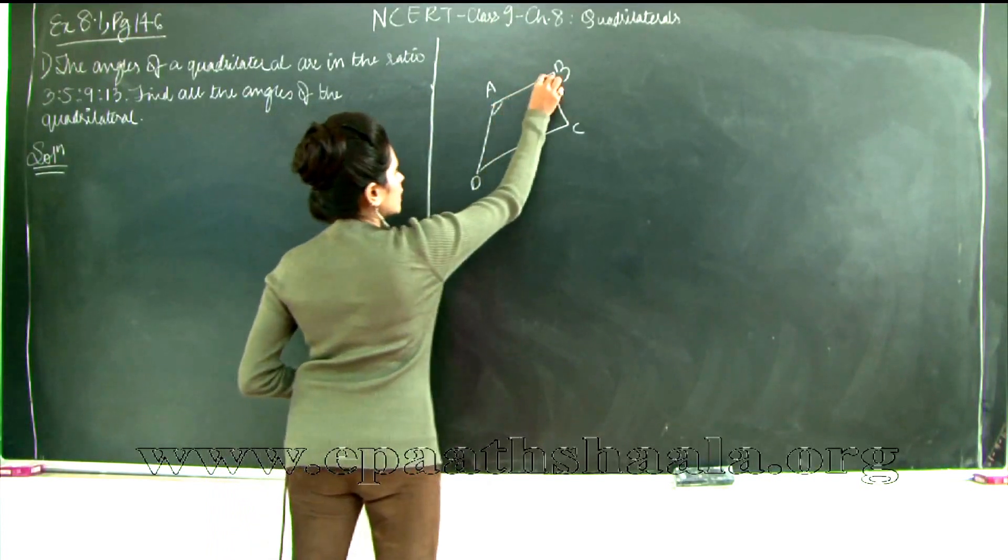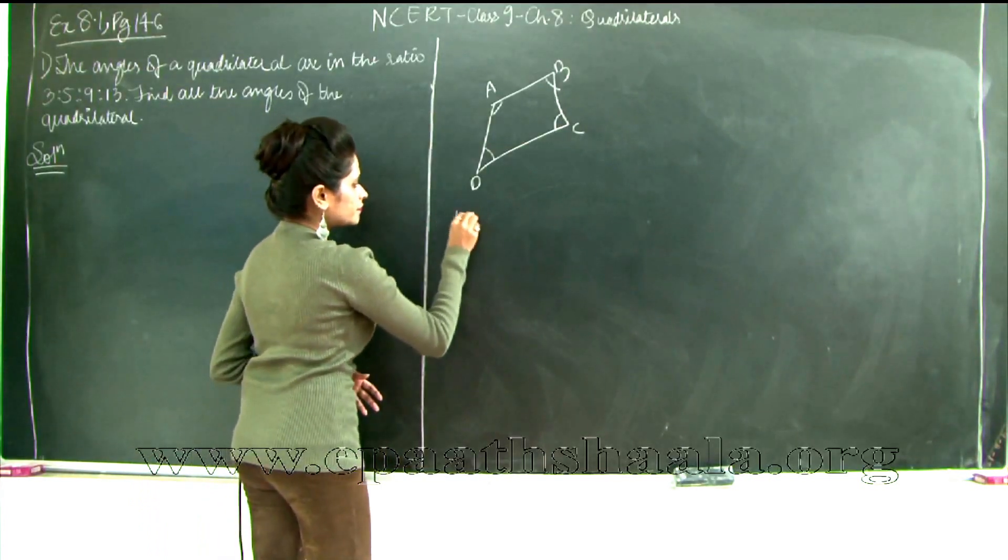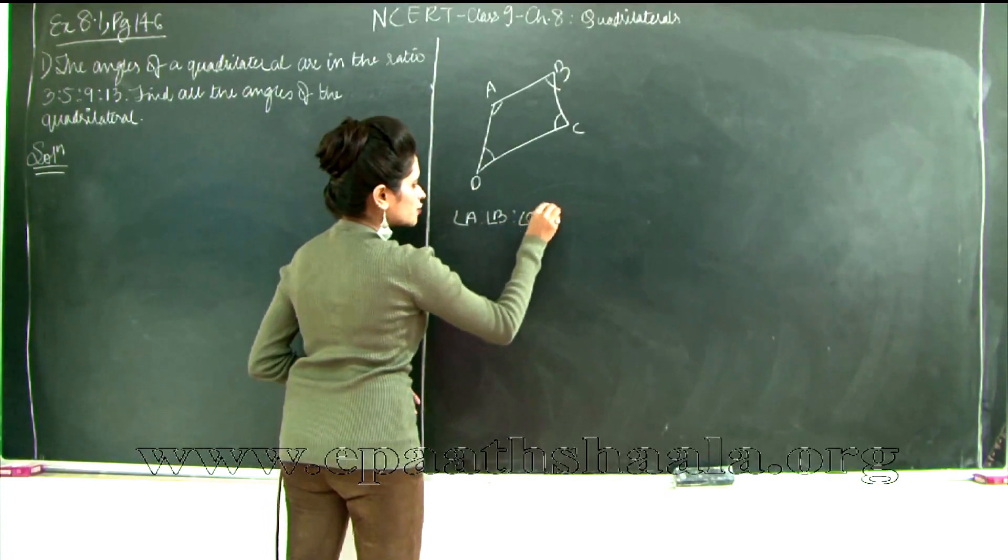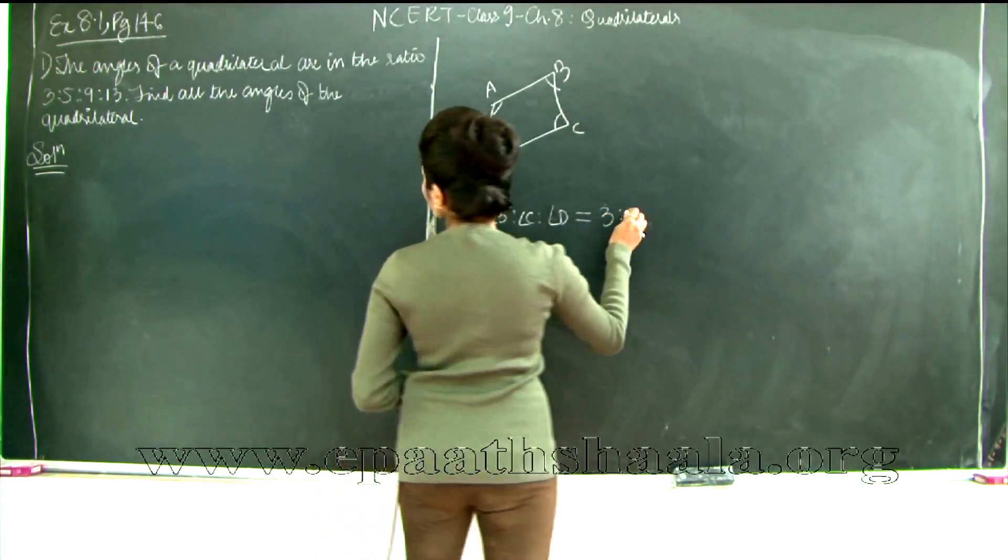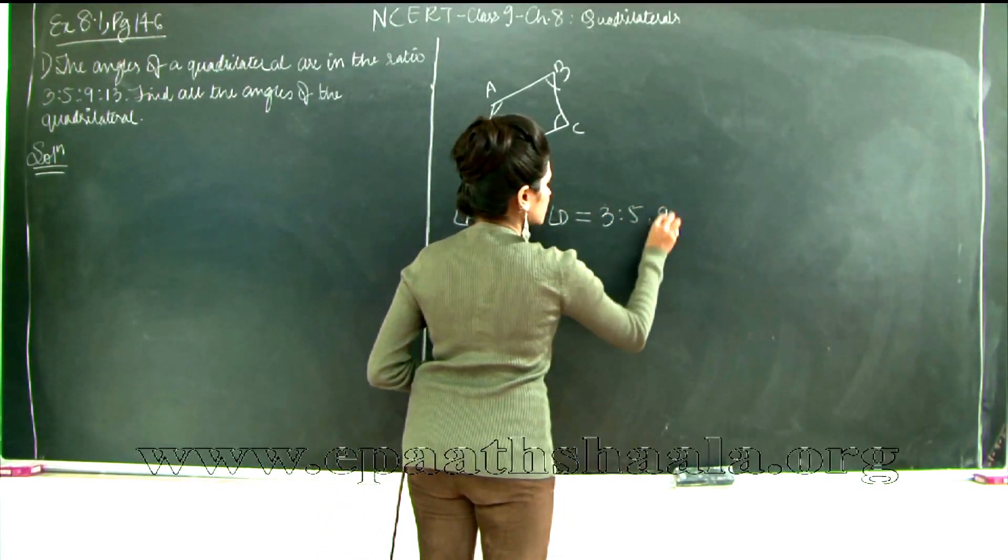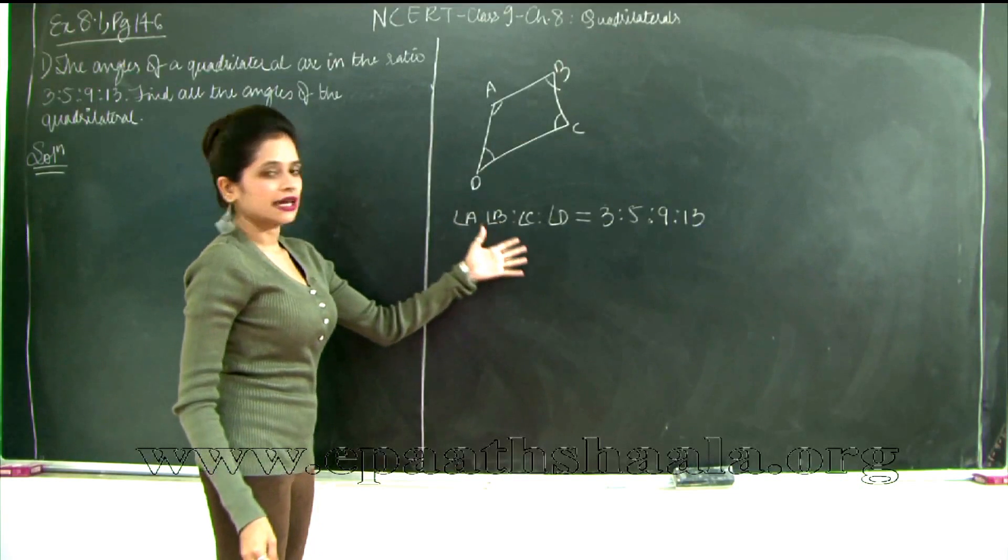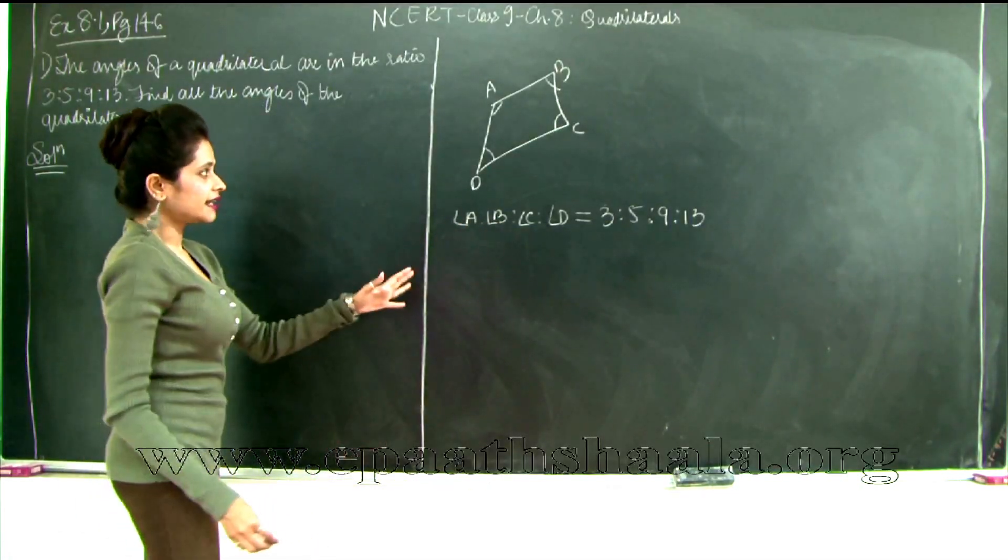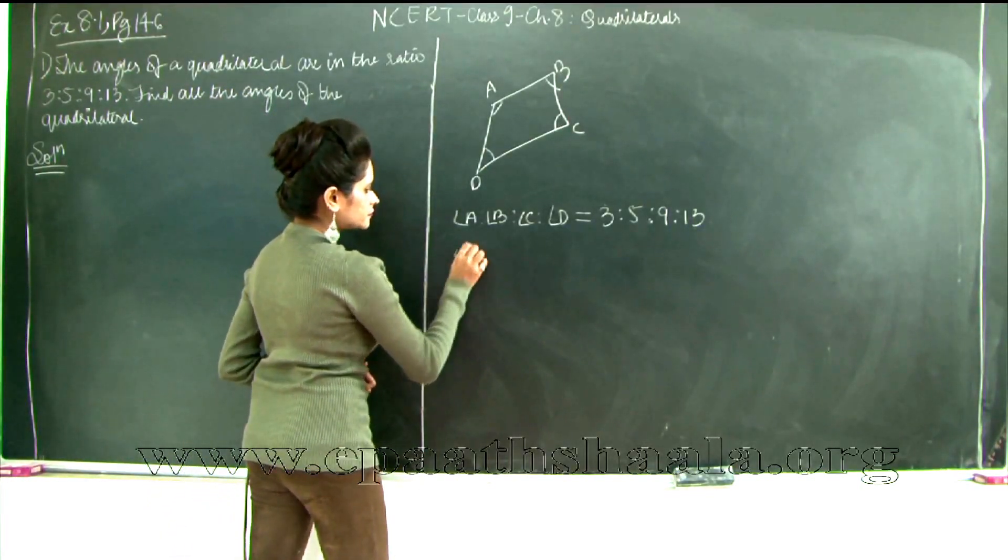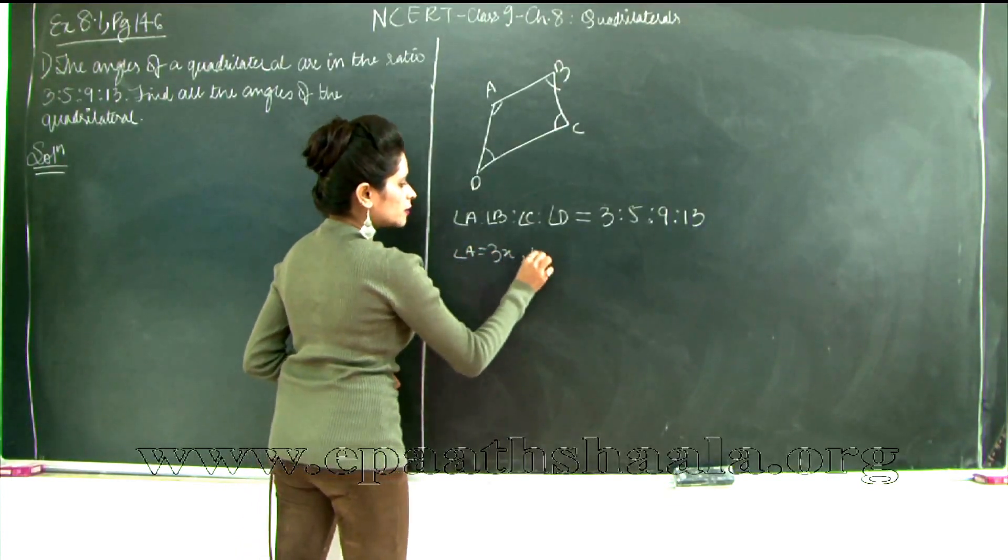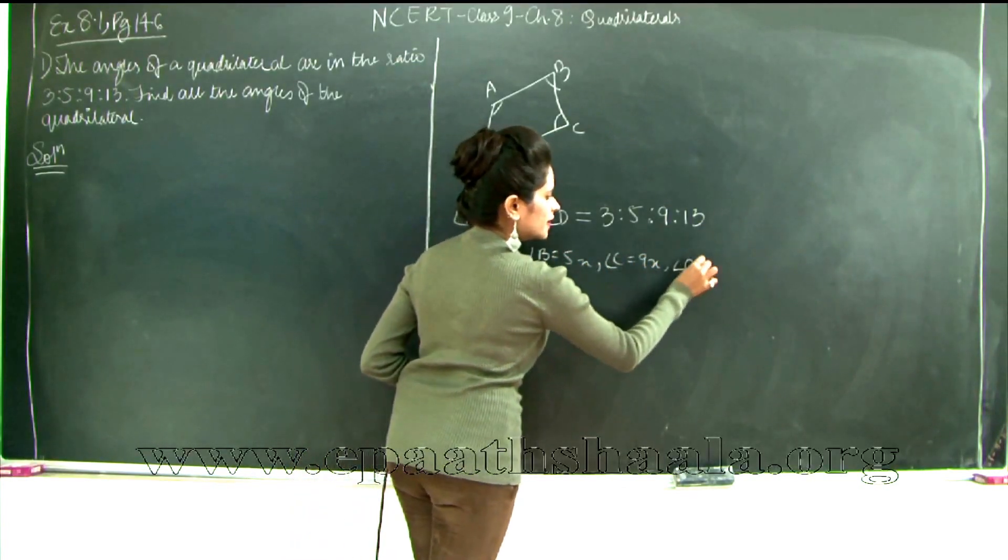Now it's given that there are four angles to it. They are in the ratio A is to B is to C is to D is nothing but in the ratio 3 is to 5 is to 9 is to 13. Now we need to find the measure of angles A, B, C and D. So what I will say is let the common ratio between the angles be x. Therefore what will my angles become? My angle A will therefore be 3x, B will be 5x, C will be 9x and D will be 13x.